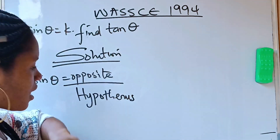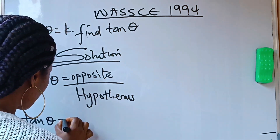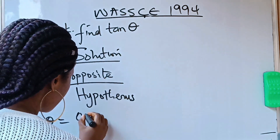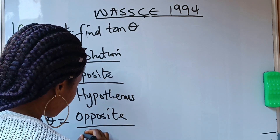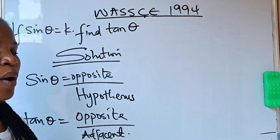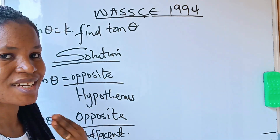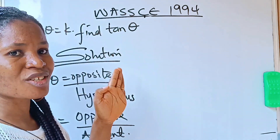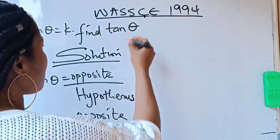Now, in trigonometry, our tan theta is equal to opposite over adjacent. Let me introduce you to the trig ratios — the sine, the cosine, and the tangent.